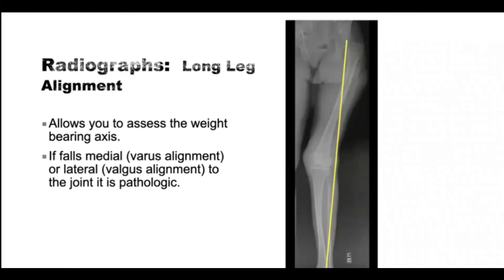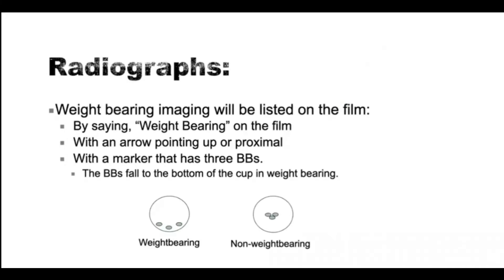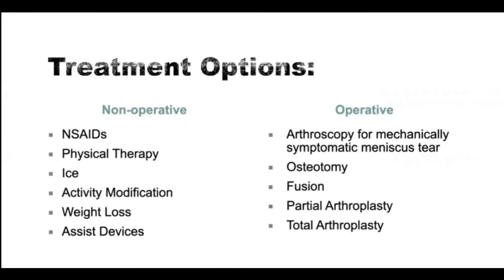You can also get a long-leg film — a three-foot film that gives you the axis of the extremity. If you drop a plumb line from the hip to the ankle, you can see the amount of varus or valgus accurately. If the plumb line falls medial, it's a varus knee; if it falls lateral, it's a valgus knee — like this one on the right. To confirm weight-bearing: it can say 'weight-bearing' on the film, have an upward arrow, or have those little BBs — if they fall to the bottom with gravity, it's weight-bearing; if they stay in the middle of the cup, it's non-weight-bearing.